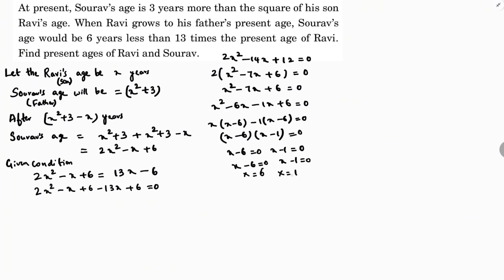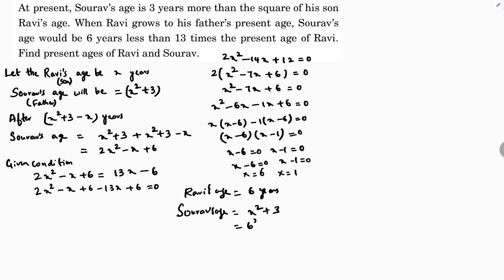Ravi's age cannot be 1 because if X equals 1, then 1 squared plus 3 equals 4, making the father's age just 4, which is not possible. So Ravi's age is 6 years. And Saurav's age is X squared plus 3, so 6 squared plus 3 equals 36 plus 3, which is 39. So Ravi's age is 6 and Saurav's age is 39.